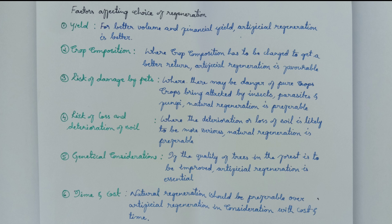Going through each factor: First, yield — for better volume and financial yield, artificial regeneration is better. Second, crop composition — where crop composition has to be changed to get a better return, artificial regeneration is favorable. Third, risk of damage by pests — where there may be danger of pure crops being attacked by insects, parasites, and fungi, natural regeneration is preferable. Fourth, risk of loss and deterioration of soil — where deterioration or loss of soil is likely to be more serious, natural regeneration is preferable.